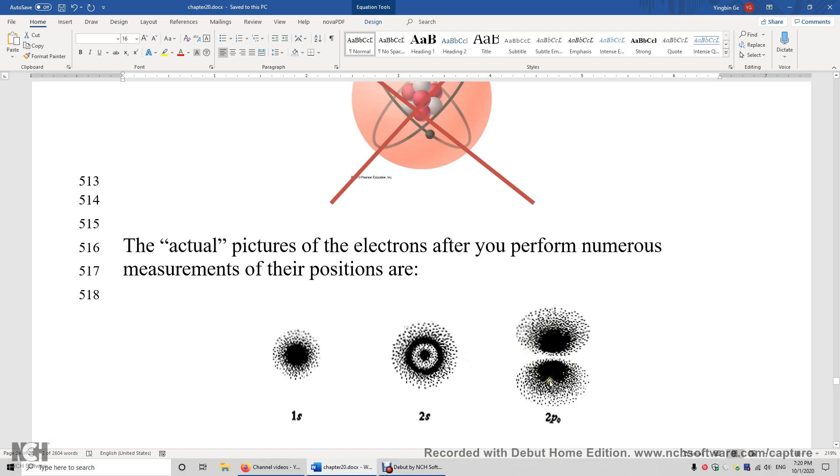Now this is actually the 2pz atomic orbital. So again, the 2pz electron can appear anywhere except on the nodal plane. And this is z equals 0, planar nodal surface.